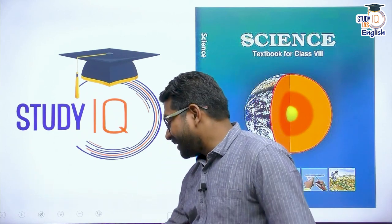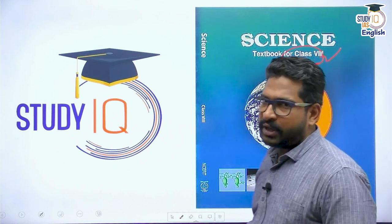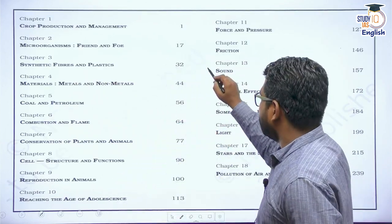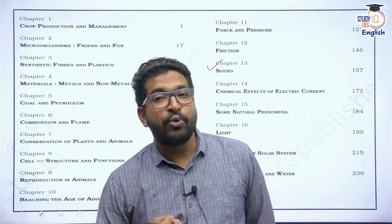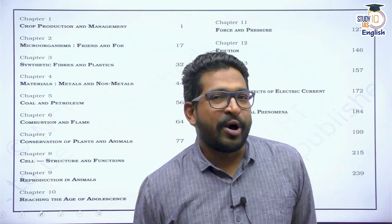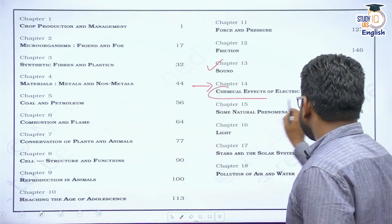Hello and welcome to Study IQ. I am your friend Rahul Saigamkar. Let's continue our NCERT science series discussion. We have reached NCERT science for class 8 and are doing a chapter-by-chapter discussion. In our previous interaction we spoke about sound, chapter 13 — what is the definition of sound, how does sound propagate, what kind of wave is a sound wave, and its characteristics. Today let's move on to chapter 14: chemical effects of electric current.